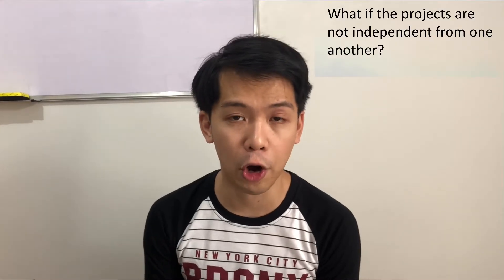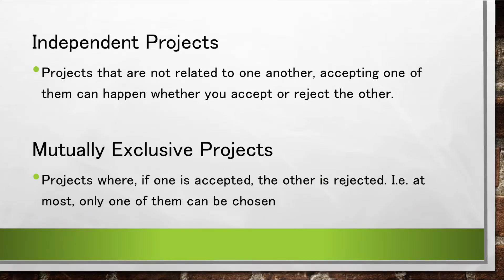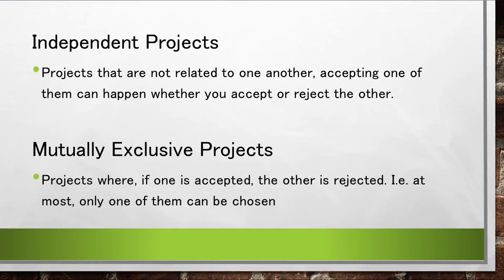But what if the projects are not independent? Independent projects are projects that are not related to one another — accepting one of them can happen whether you accept or reject the other. So if you accept project A, you can still accept project B or project C, if they are independent from one another.